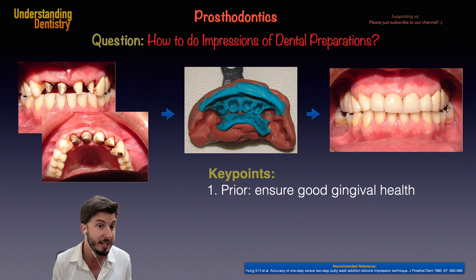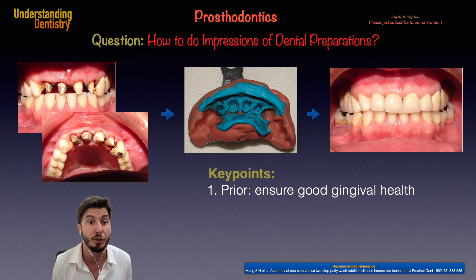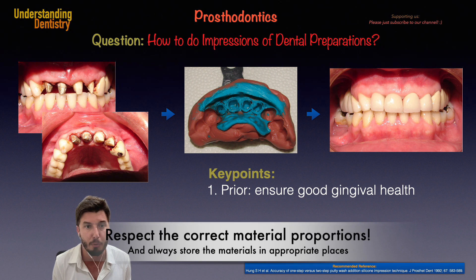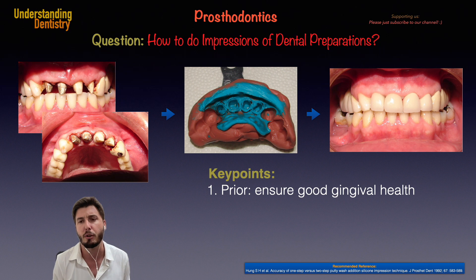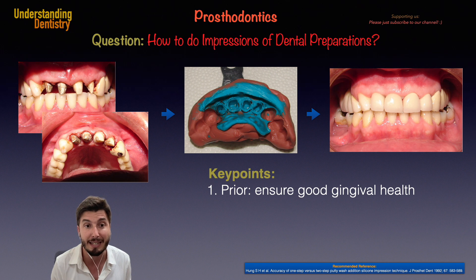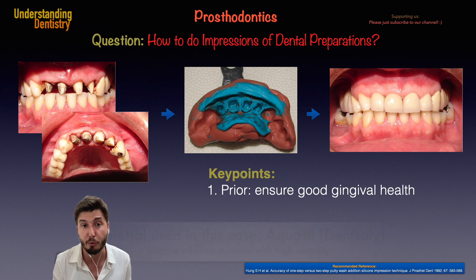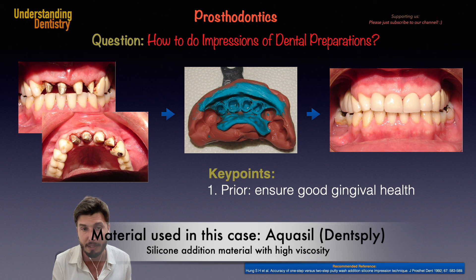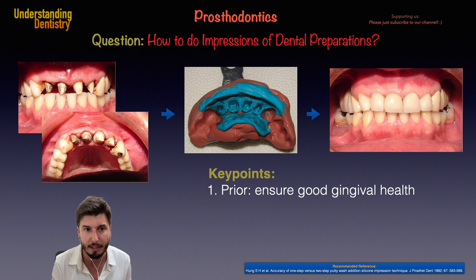In this case we are seeing four dental preparations, and probably you realize we are using addition silicon. You need to know how to use the correct material proportions and how to manipulate the materials. The method you are seeing on screen is the one-stage method — done at once. So hard and soft putty are mixed at the same time and used at the same time to perform the impression of those four preparations.